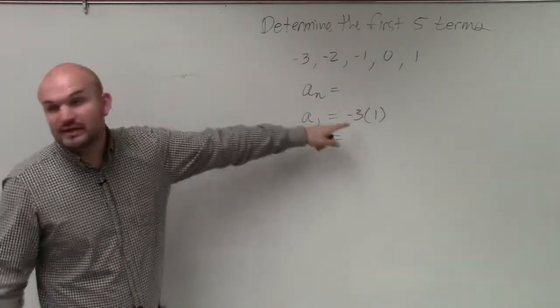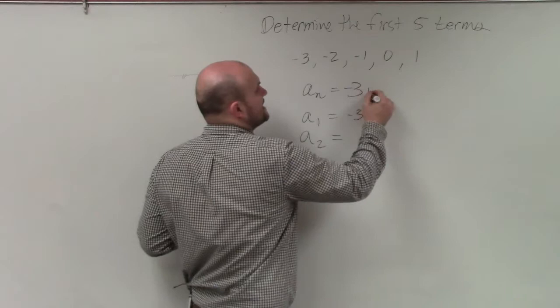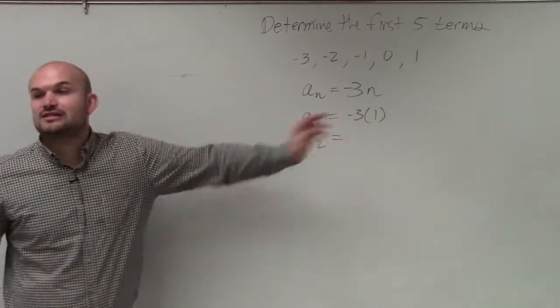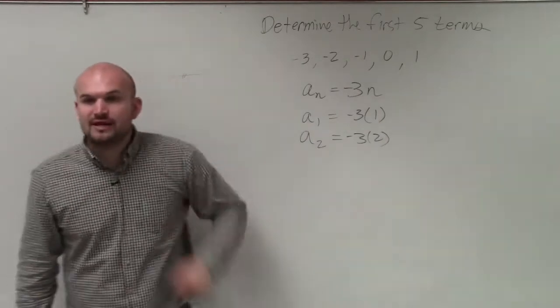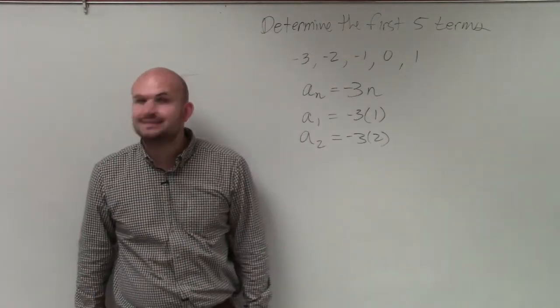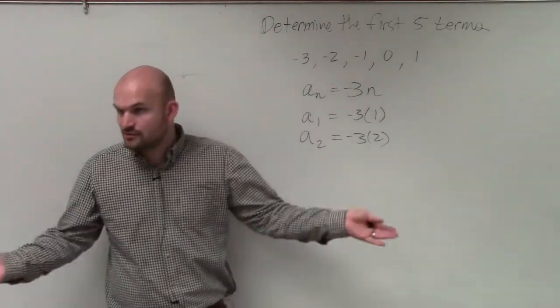Now, if we use that same formula, you're saying the formula is negative 3 times n. So let's plug in 2. Negative 3 times 2. Does that work for the next one? Does that give you negative 2? No. So negative 3n doesn't work.